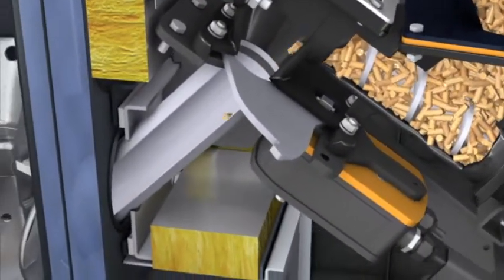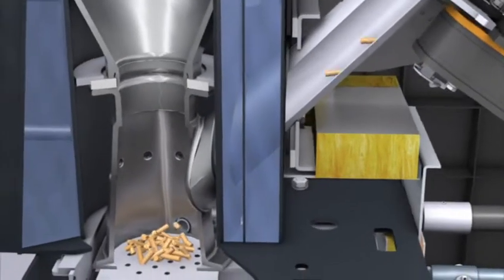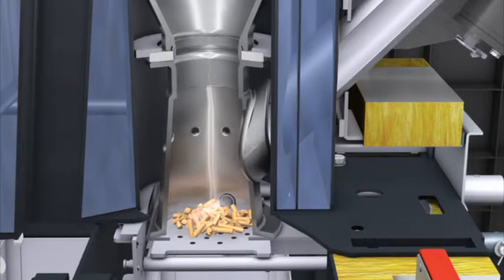The Stoker Auger transports the pellets to a drop tube. Piece by piece, the pellets are gently dropped onto a grate in the sturdy steel combustion chamber. There, they are ignited by a stream of hot air.